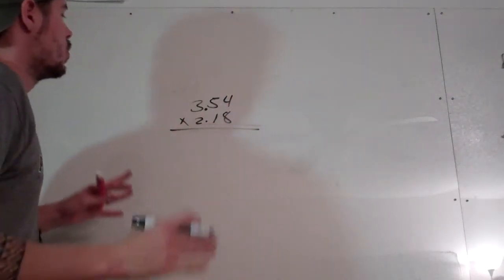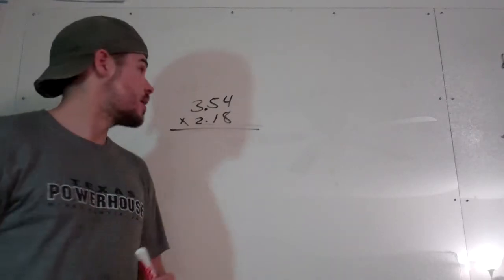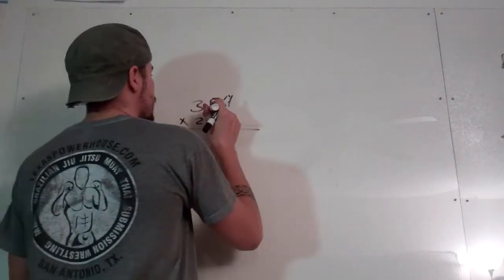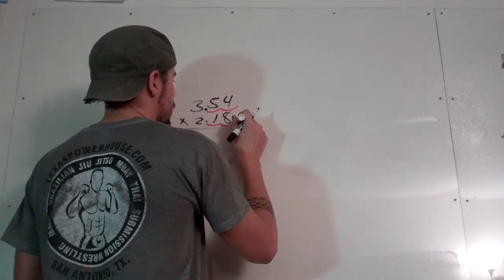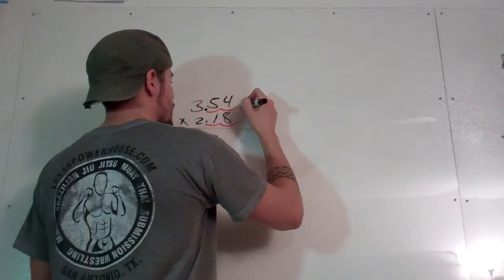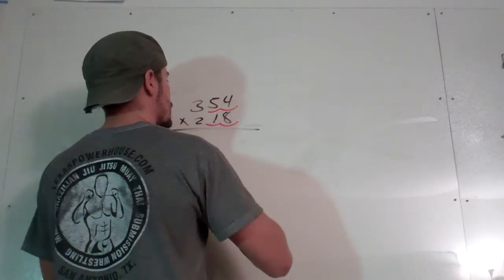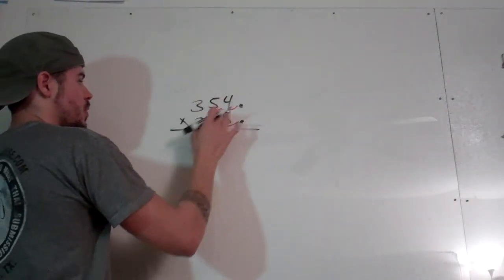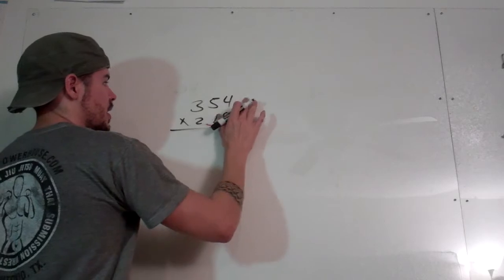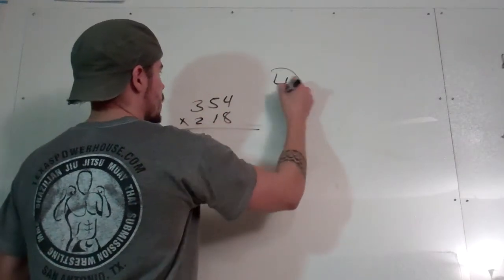Okay. My first step is I want to take the decimals and move them to the right. That's what I'm going to do. One, two, three, four. So now my new decimal point goes right here. Which really just means 354 times 218. So I can just get rid of that. But just remember that I moved it over four times.